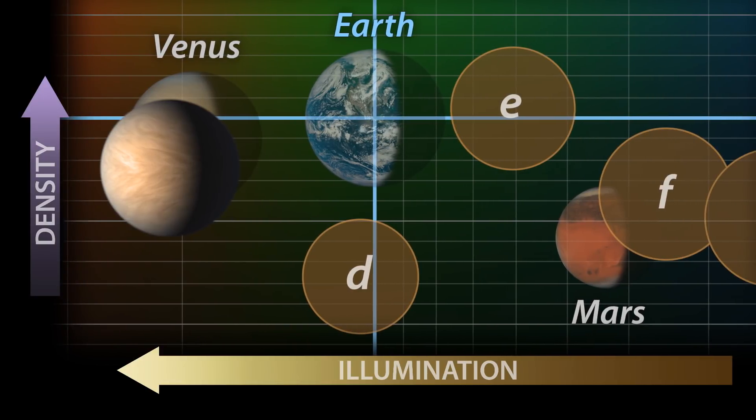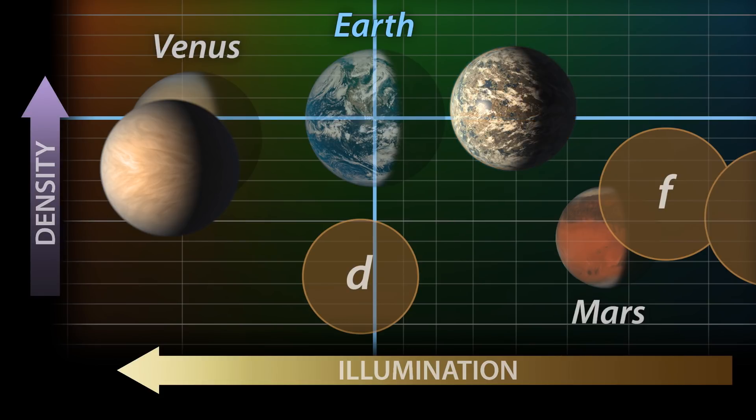TRAPPIST-1e is almost the same size and density as Earth. And while it receives a little less illumination, it still gets more than Mars. It's not hard to imagine that, depending on its exact composition, it too could have oceans on its surface.